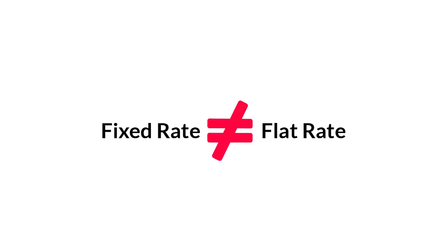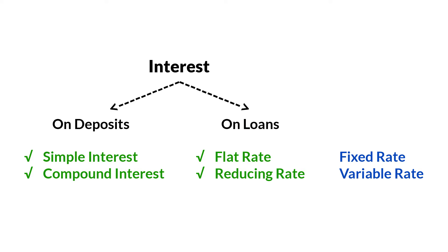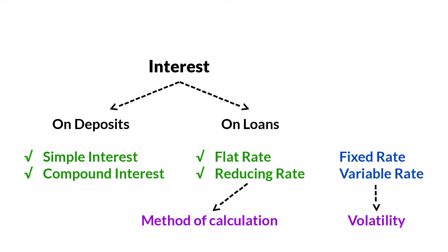The term fixed rate of interest is often confused with the term flat rate of interest. While referring to interest rate, the term flat rate or reducing rate indicates the way in which interest is measured and calculated. Whereas the term fixed rate or floating rate is used to indicate whether the interest will remain the same or will it change or fluctuate as per the market lending rates.